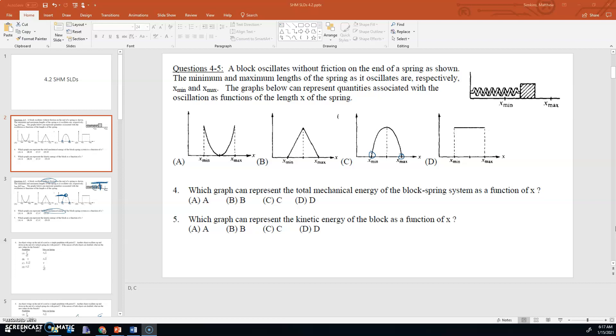First we have this block oscillating without friction. It asks which graph represents the total mechanical energy. Remember that definition means kinetic plus potential, all the energies really. That's what mechanical energy means. And as we know, if this is frictionless, which it says it is, the total mechanical energy has to stay the same in our system by the conservation of energy. So number four has got to be D.